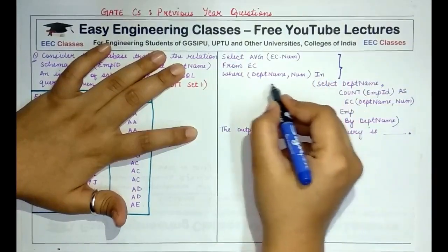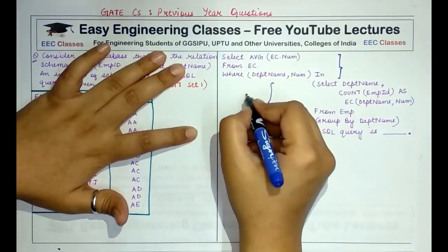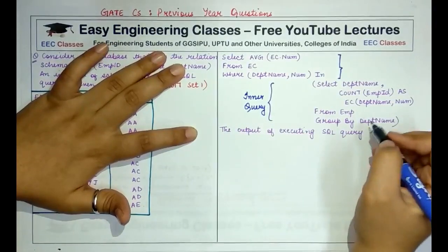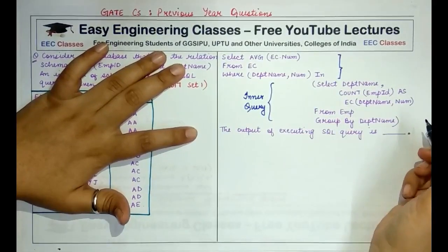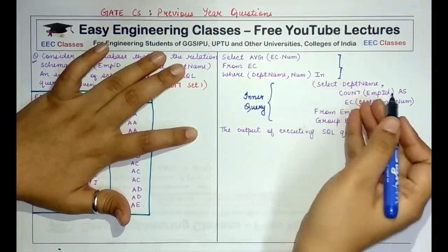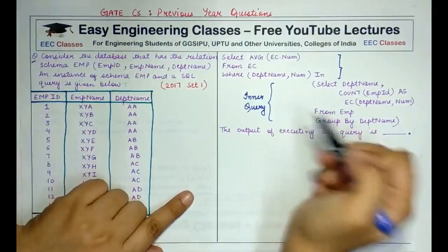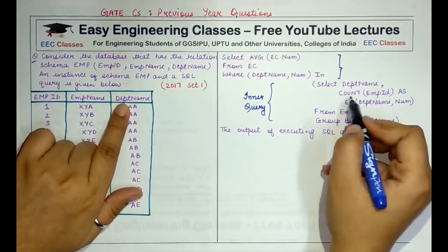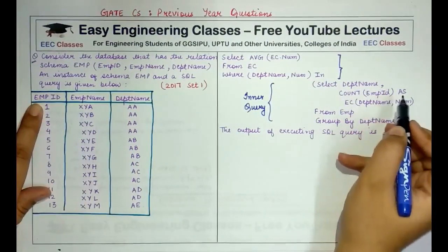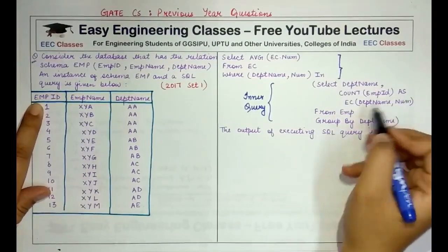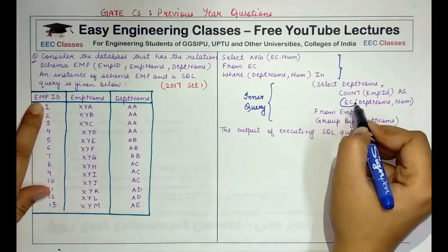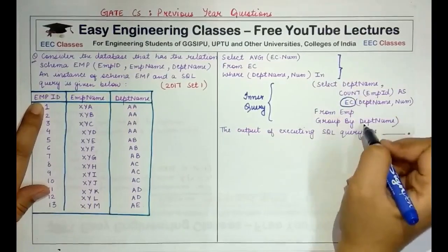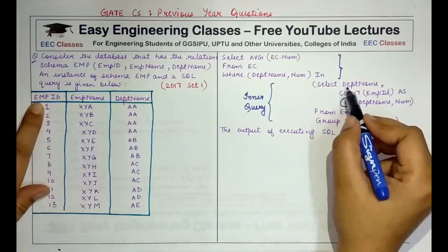This entire query consists of two parts — the inner query and the outer query. Whenever you have a nested query, a query within a query, you first find the output of the inner query, and then depending on that, you find the output of the outer query. The inner query selects department_name and the count of employee IDs, naming the resulting table 'ec' with columns dept_name and num.